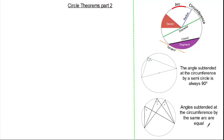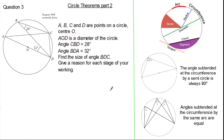So now we have two circle theorems. Let's try another exam question. The question states that points A, B, C and D are on a circle with centre O. We know AOD is the diameter of the circle. Angle CBD is 28 degrees and angle BDA is 32 degrees. The question wants us to find angle BDC, ensuring we give a reason for each stage of our working out. You have all the information you need to tackle this question, so give it a try and pause if you need.